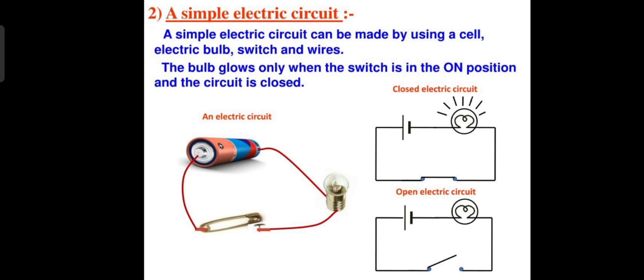A simple electric circuit is when there is a flow of electric current. It is comprised of a battery or cell in which a switch is connected and a bulb is connected. A simple electric circuit can be made by using a cell, electric bulb, switch, and wires. The bulb glows only when the switch is in the ON position and the circuit is closed.